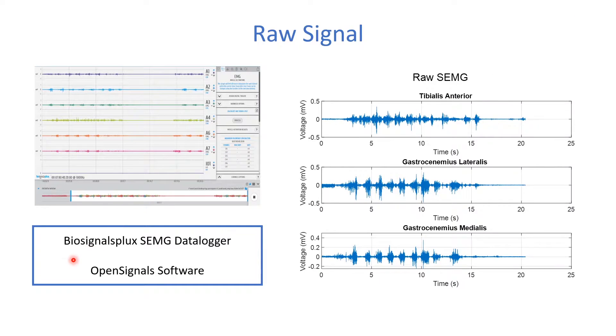For my experiments, I used a BioSignals Plux SEMG data logger with OpenSignal software. This is the screen on OpenSignals and you can see I had six channels, each corresponding to a pair of electrodes. And based on the data I got, I plotted the raw SEMG data for three channels or three muscles, which are the tibialis anterior, gastrocnemius lateralis and medialis. All this data processing was done on MATLAB and this is the raw SEMG data plot. Now, if you look at this, you can see a lot of distortion and sensor noise. So, the first step in processing this signal would be to filter it.